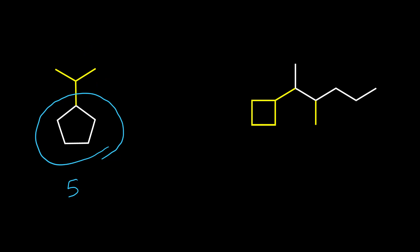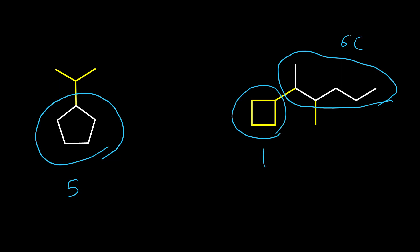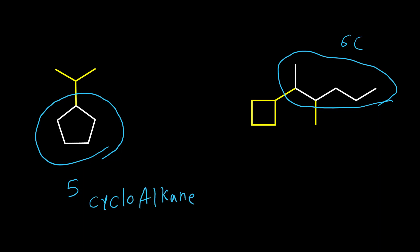But if we take a look at this compound, in our chain we have six carbons and in our ring we have only four carbons. So the parent in this compound is the chain, not the ring. When we name these two compounds, we name the first one like a cycloalkane, but for the second compound we name it like an alkane and mention the ring as a substituent during the naming.